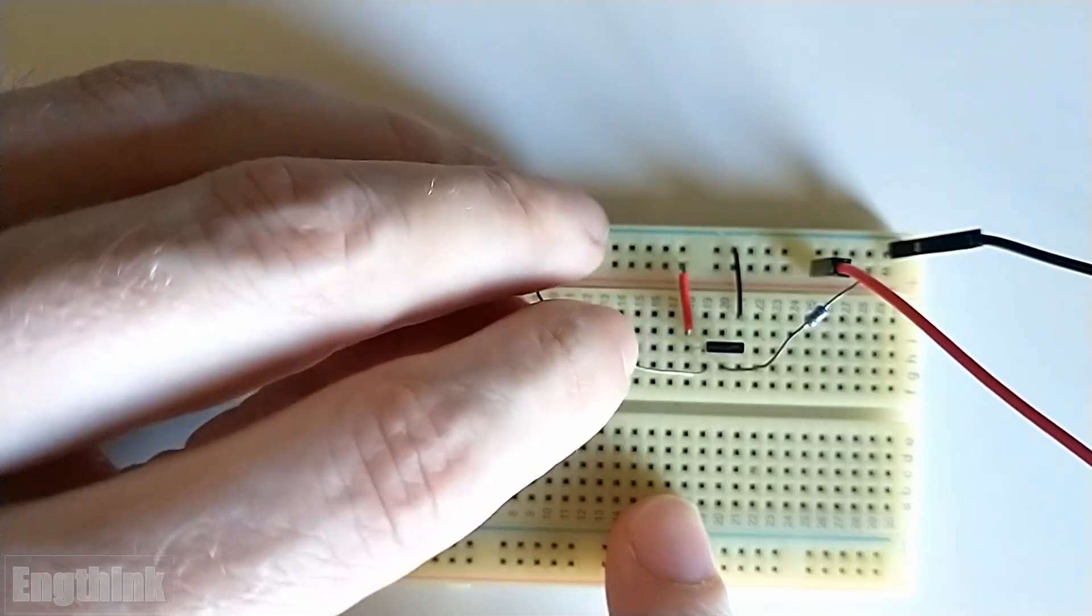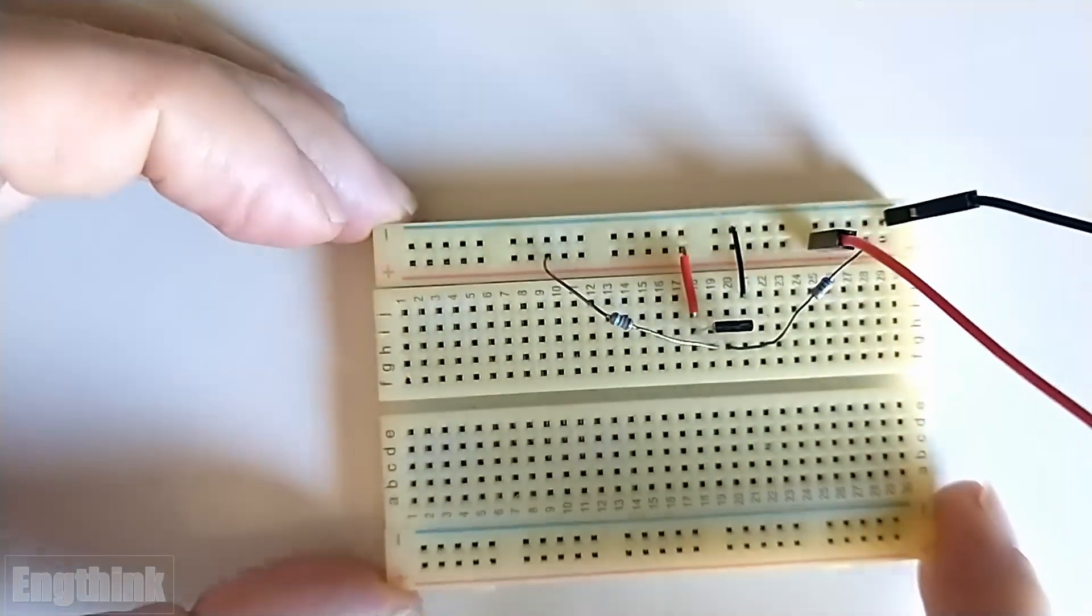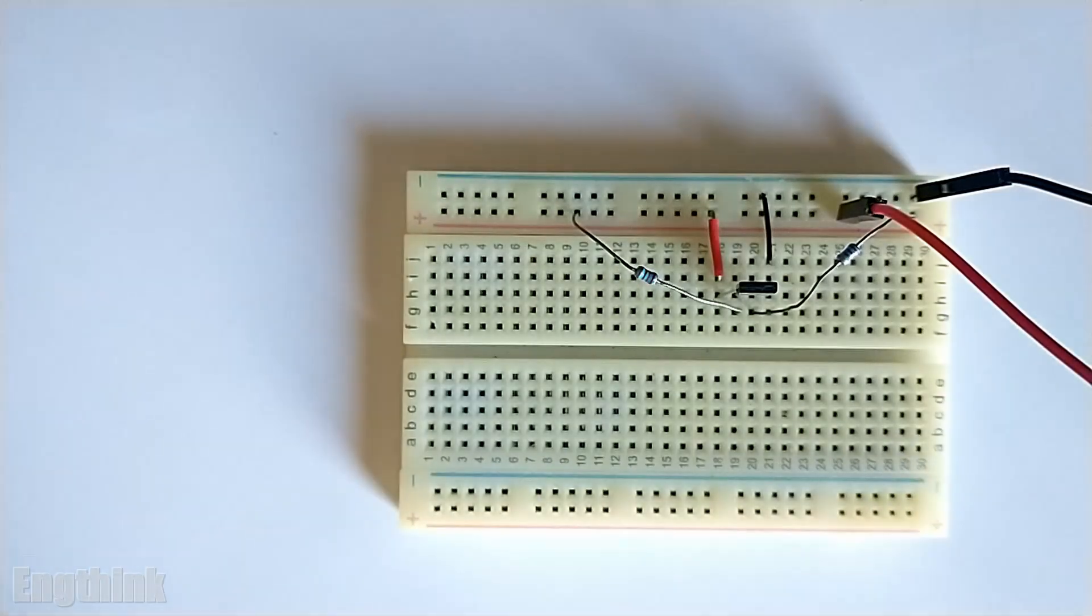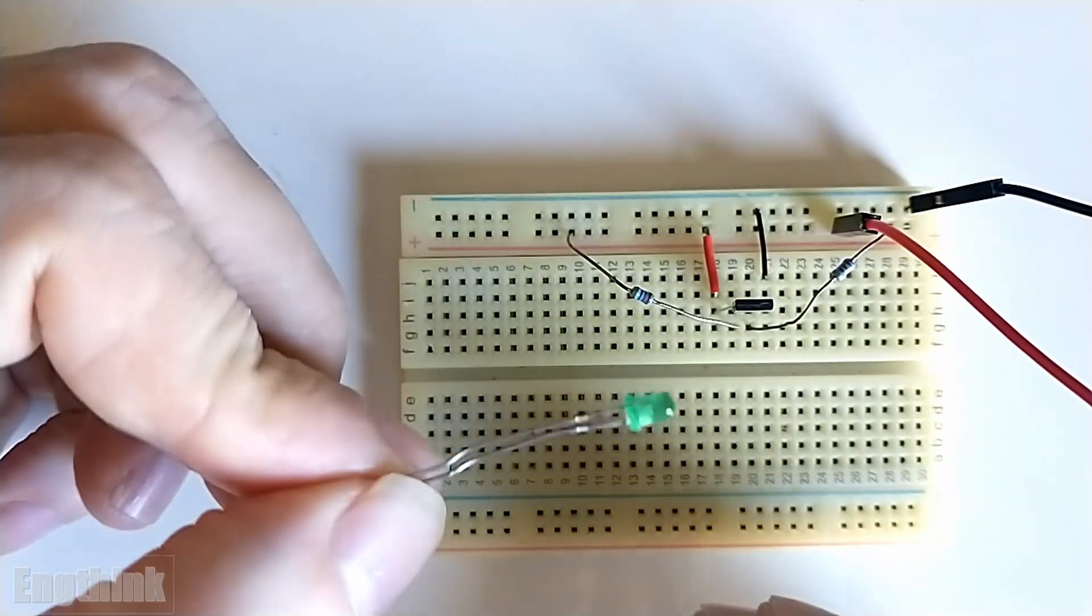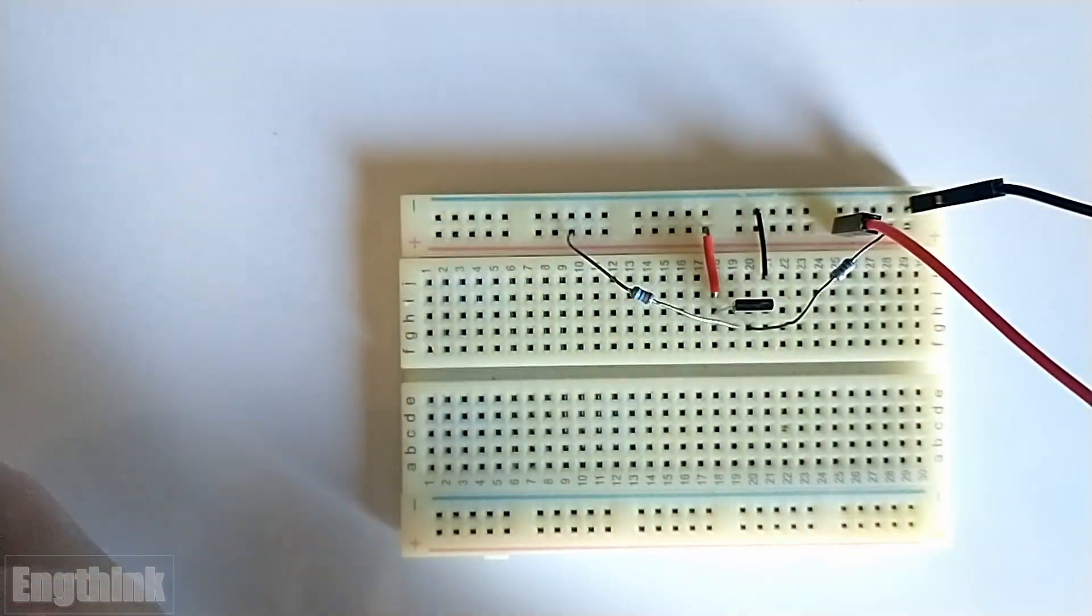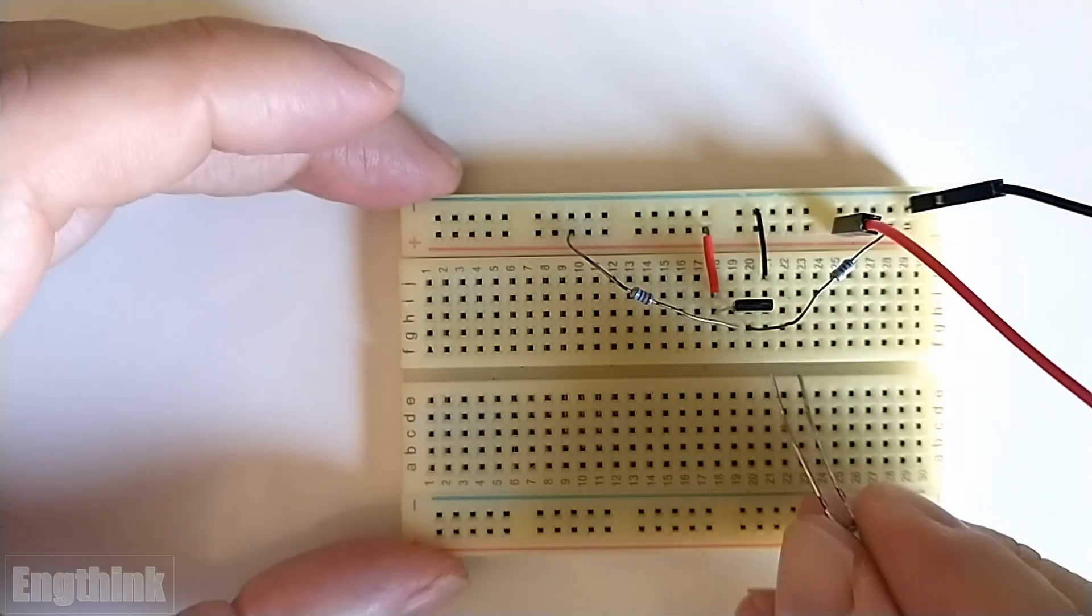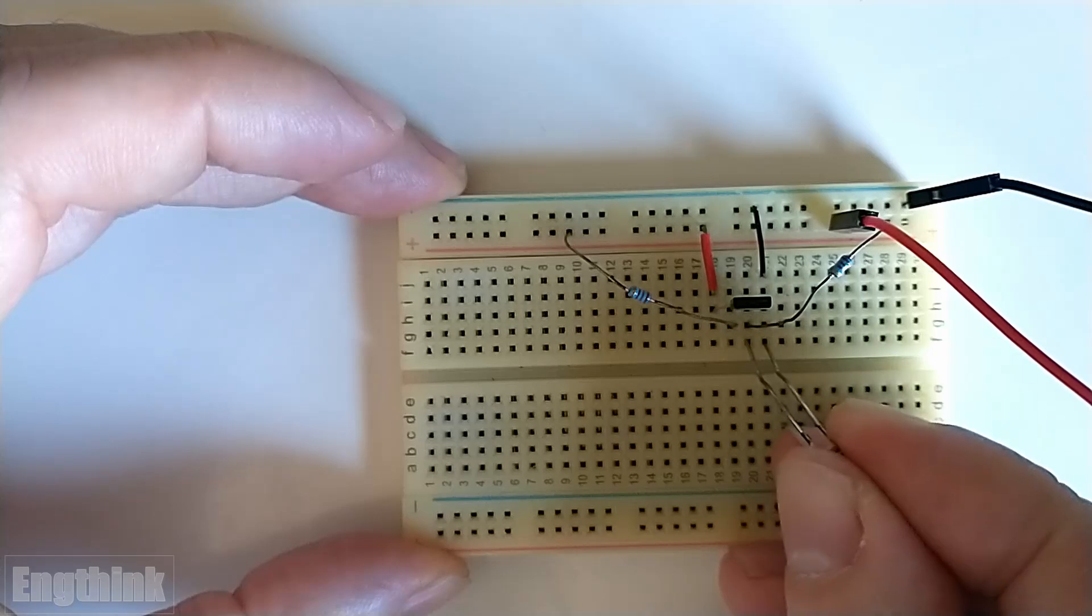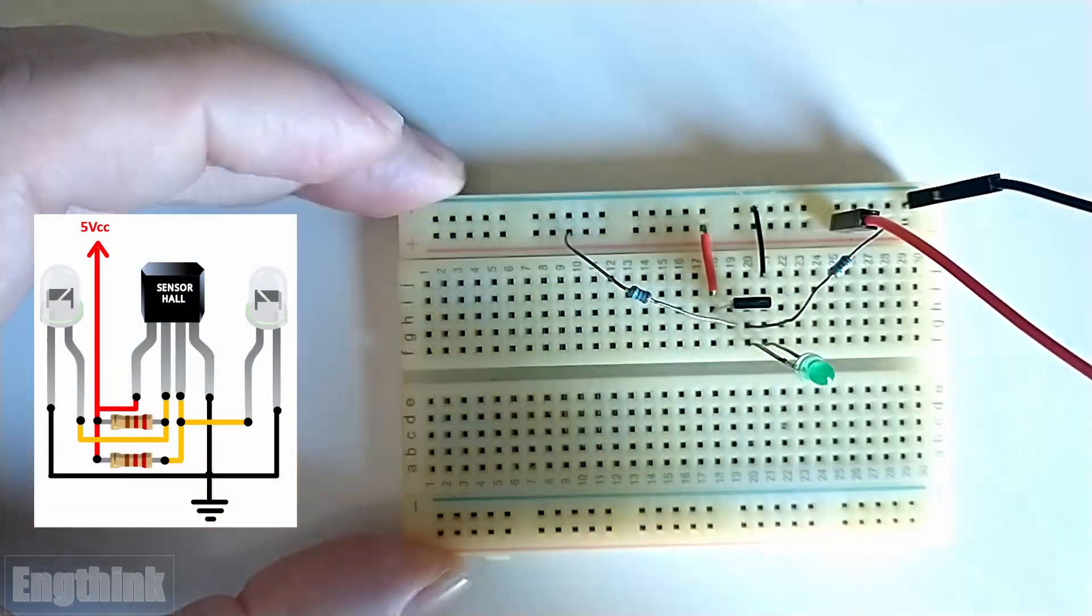Now with both resistors connected, we already have all that is necessary to start the test and the measurements in the outputs. To make it easier to understand the behavior of the outputs, I will add one LED per output. So, when the magnetic field approaches the Hall Effect sensor we can see the transitions in the outputs.